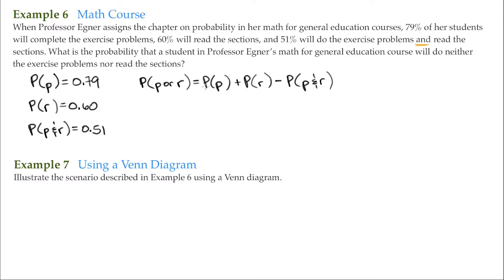This comes out to be 79%, plus 60%, minus 51%. So 79% plus 60% minus 51% equals 88%.